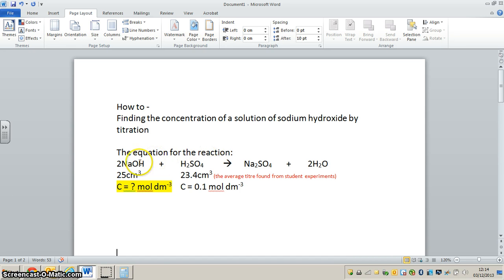Basically, sodium hydroxide is being neutralized by sulfuric acid to make sodium sulfate and water. In this experiment, students put 25 cm³ of sodium hydroxide of unknown concentration into a conical flask and titrated it with sulfuric acid of known concentration, 0.1 mol per dm³. The average titer, having done this experiment 3 or 4 times, was 23.4 cm³.